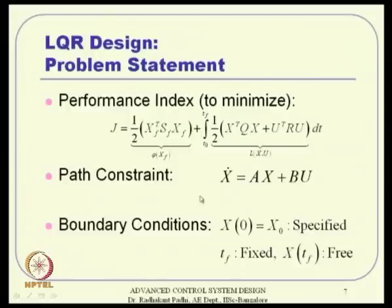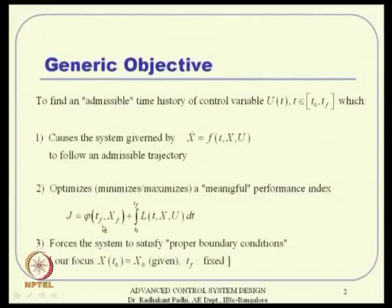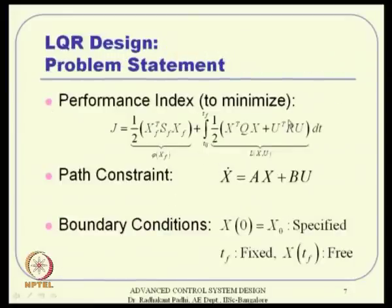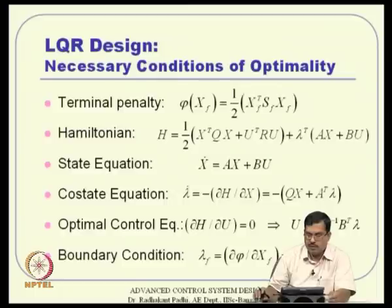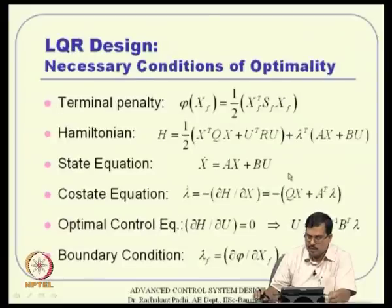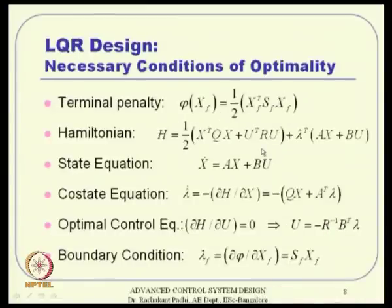Going back to the problem: we want the system to drive x to zero while also penalizing excessive control. The cost function J contains the terminal cost φ(xf) and the running cost L(x, u). Specifically φ = (1/2) xf^T Sf xf and L = (1/2)(x^T Qx + u^T Ru). The path constraint is x-dot = Ax + Bu, with x(0) specified, tf fixed, and x(tf) free.